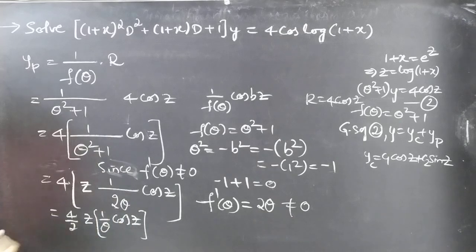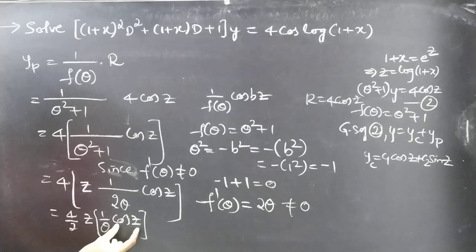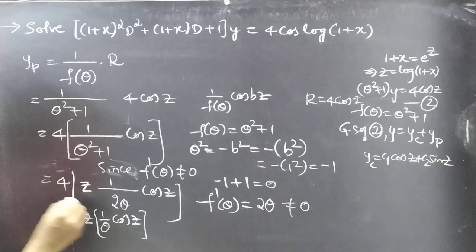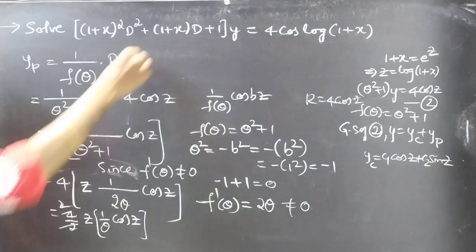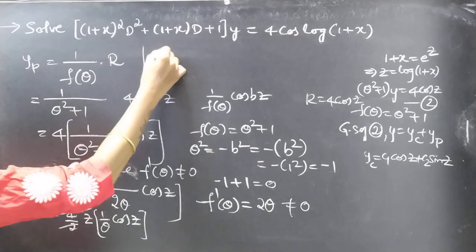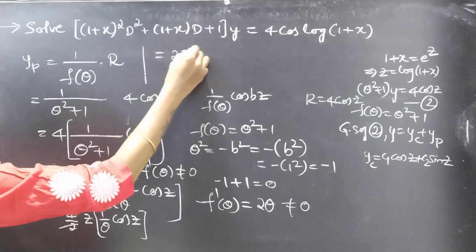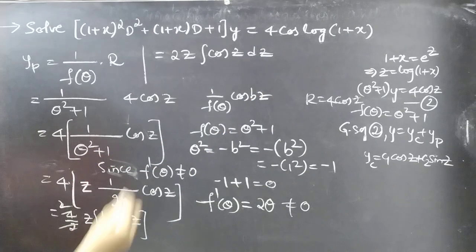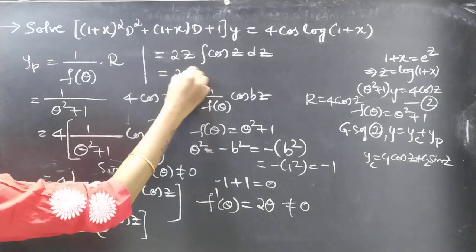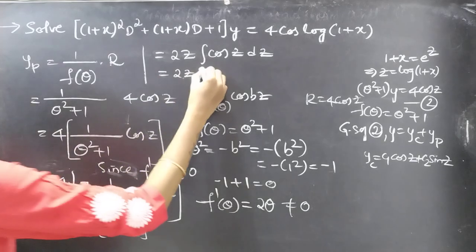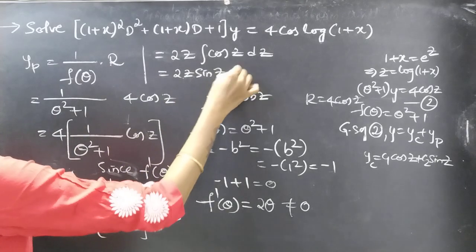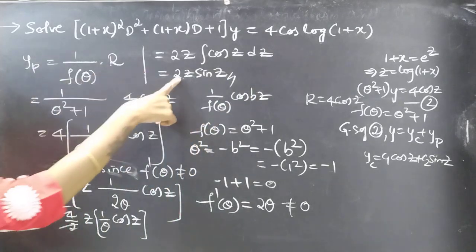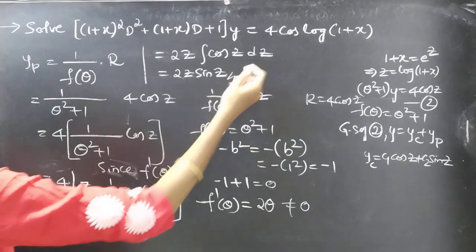Here 1/θ is the integral operator, so we integrate cos z with respect to z. We get 2z · ∫cos z dz = 2z · sin z. Therefore, yp = 2z sin z.